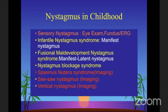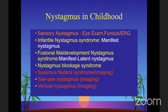Nystagmus in childhood falls into several categories. Sensory nystagmus requires eye examination — look at the fundus; ERG and other tests may be required. The more common one is infantile nystagmus syndrome, earlier known as congenital nystagmus — but mind you, this is not truly congenital and should be called infantile nystagmus syndrome. The second common type is fusional maldevelopment nystagmus, also known as manifest latent nystagmus. Spasmus nutans, seesaw nystagmus, and vertical nystagmus in a child always require imaging to rule out intracranial space-occupying conditions.